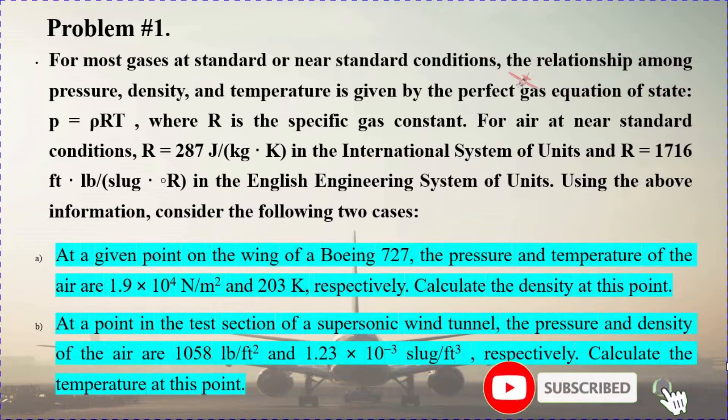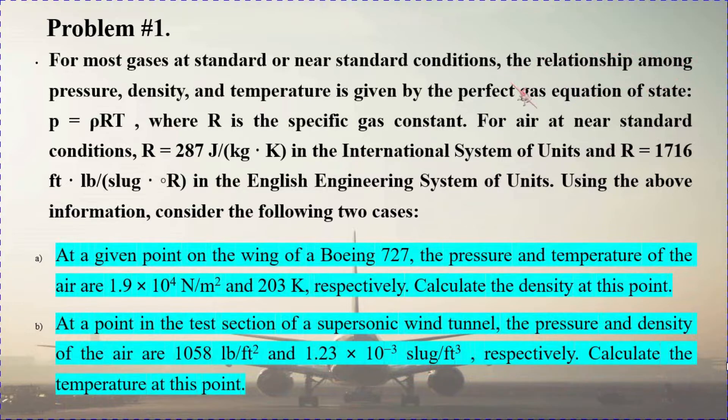R is equal to 287 joules per kilogram Kelvin in the international system of units, and R equals 1716 feet-pounds per slug per Kelvin in the English engineering system of units.